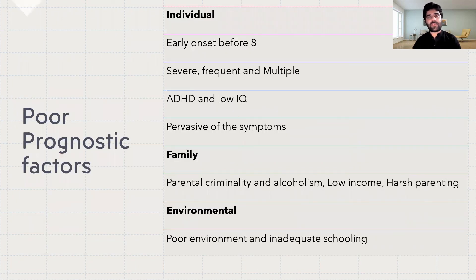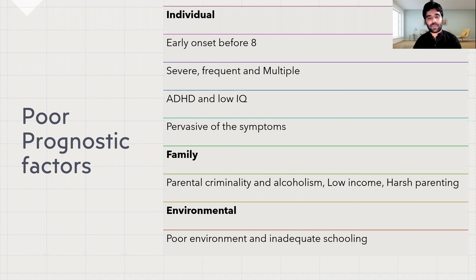The prognostic factors in Conduct Disorder can be divided into three levels: individual, family, and environmental. Individual level poor prognostic factors include early onset before the age of eight, severe, frequent, and multiple dissocial behaviors, comorbid ADHD, low IQ, and pervasiveness of symptoms. Family level poor prognostic factors include parental criminality, alcoholism, low income, and harsh parenting. Environmental poor prognostic factors include poor environment and inadequate schooling.